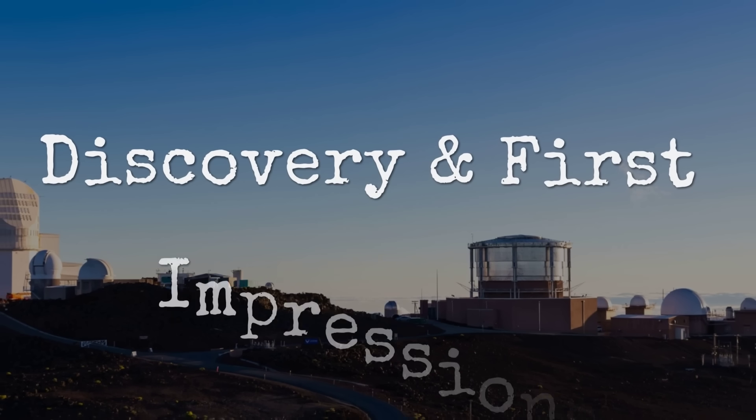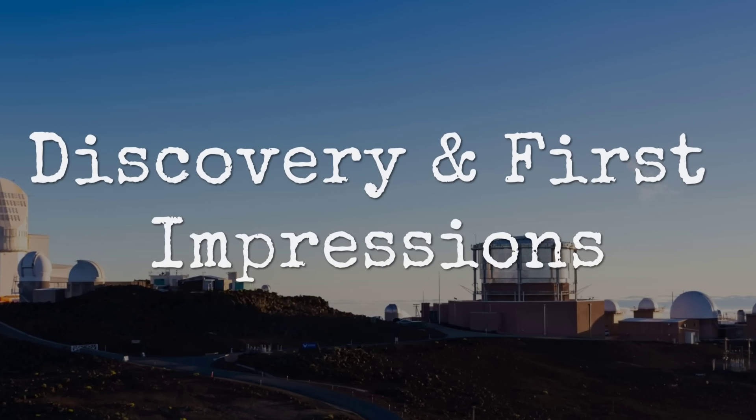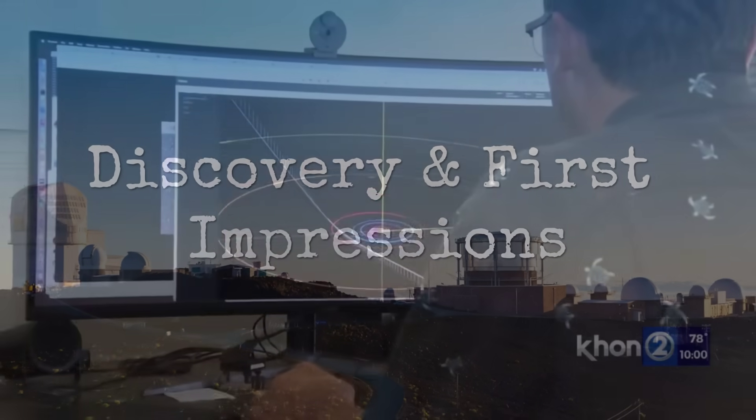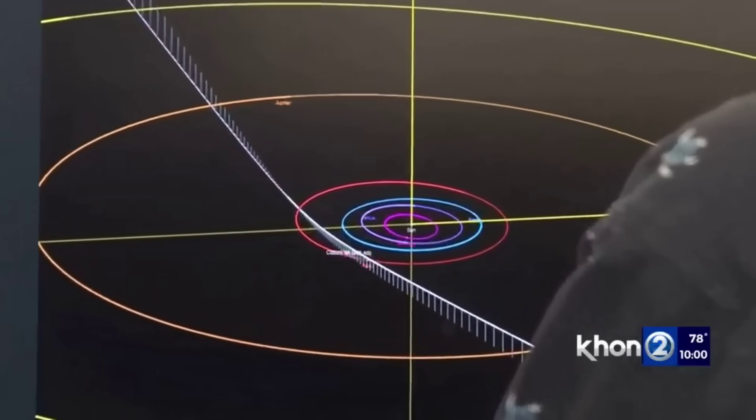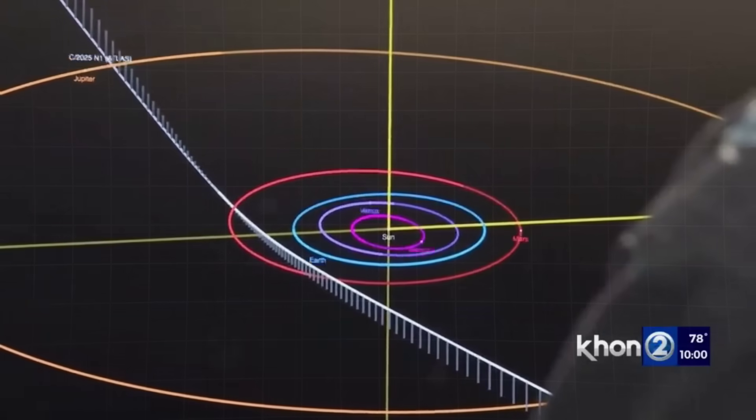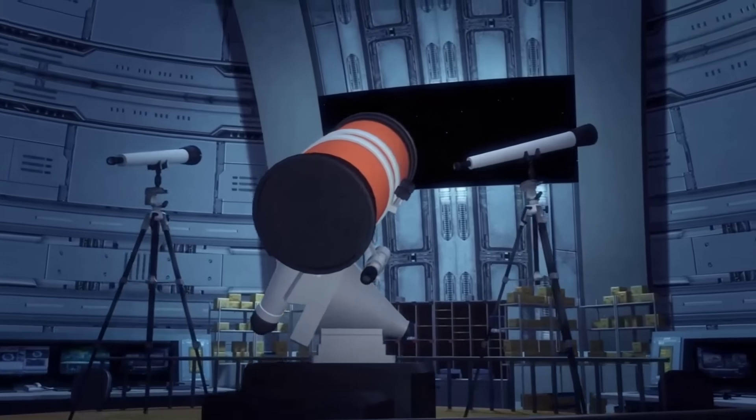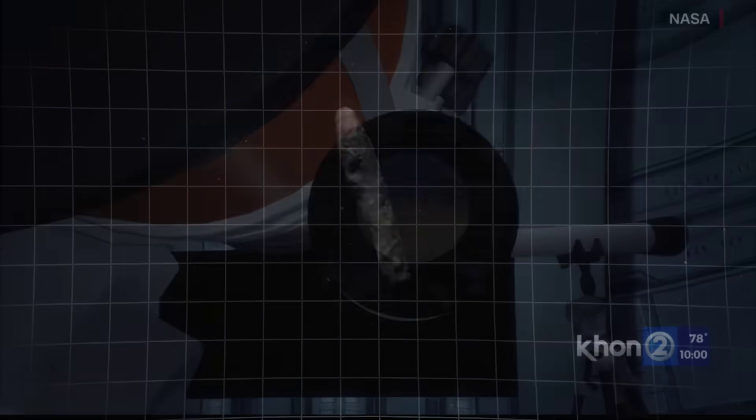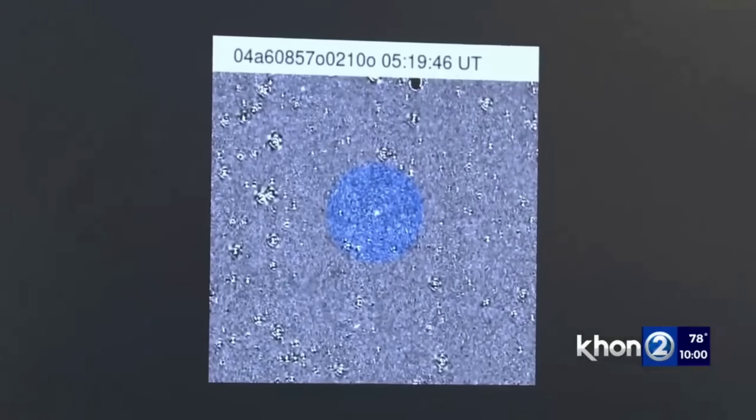3I/Atlas was first detected in early July 2025 by the Atlas Survey System in Hawaii. Initial observations immediately flagged something unusual. This wasn't behaving like anything we'd seen before.